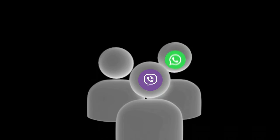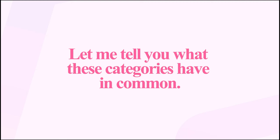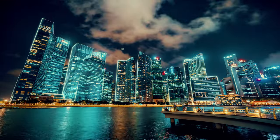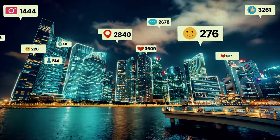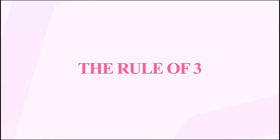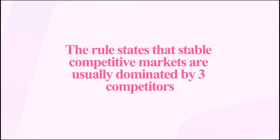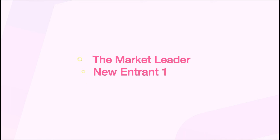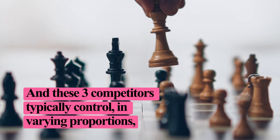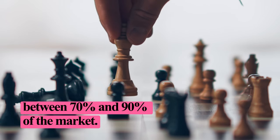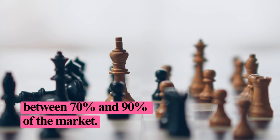Let me tell you what these brands have in common and the categories that I've put them into. They share something the business world calls the Rule of Three. The rule states that stable, competitive markets are usually dominated by three competitors — the market leader, new entrant number one, and new entrant number two — and these three typically control between 70 and 90 percent of the market.